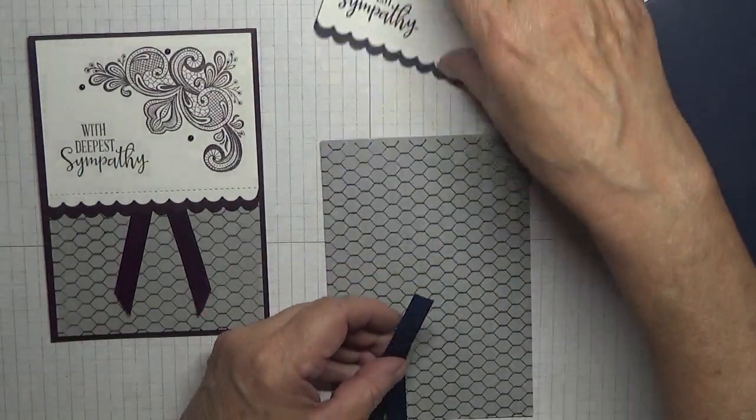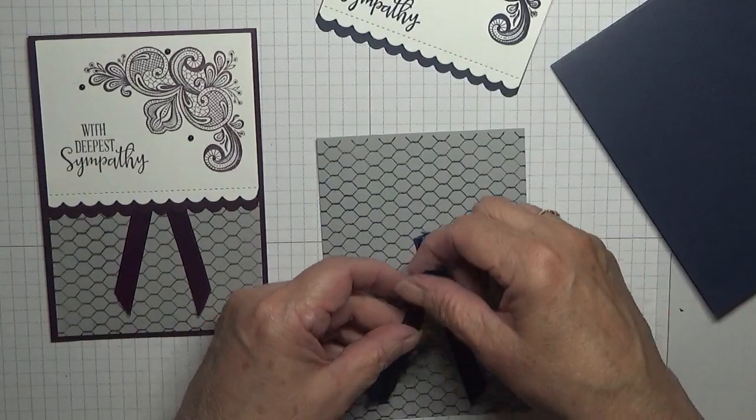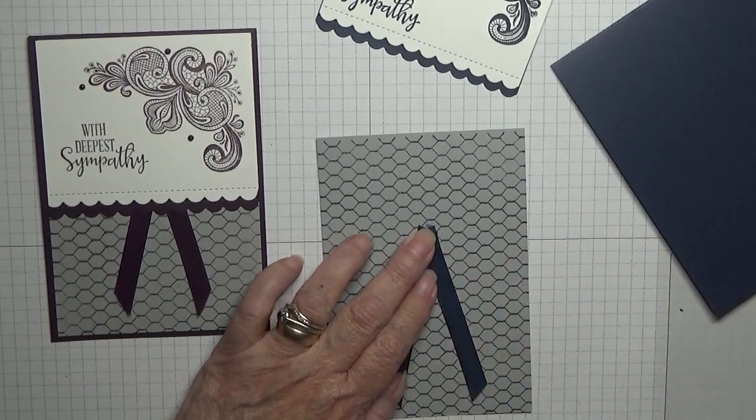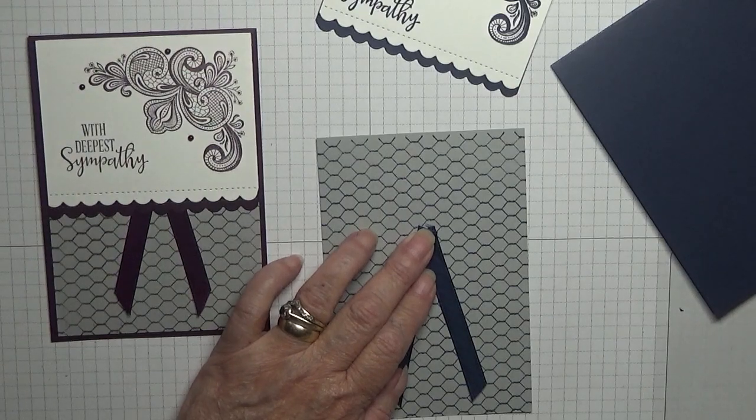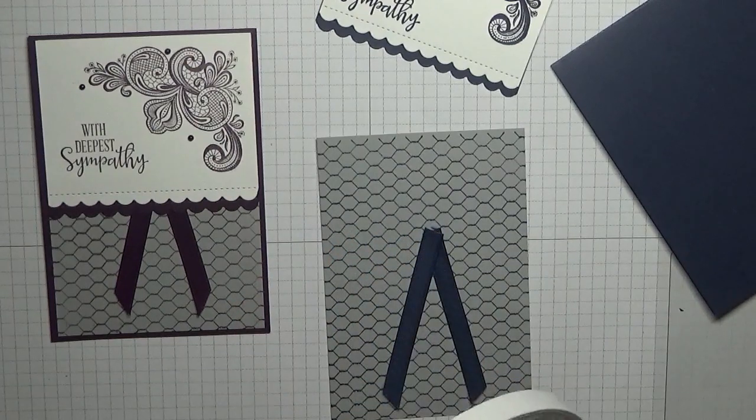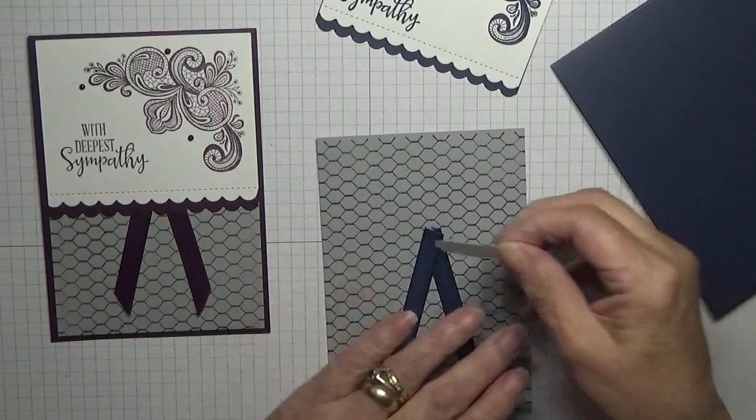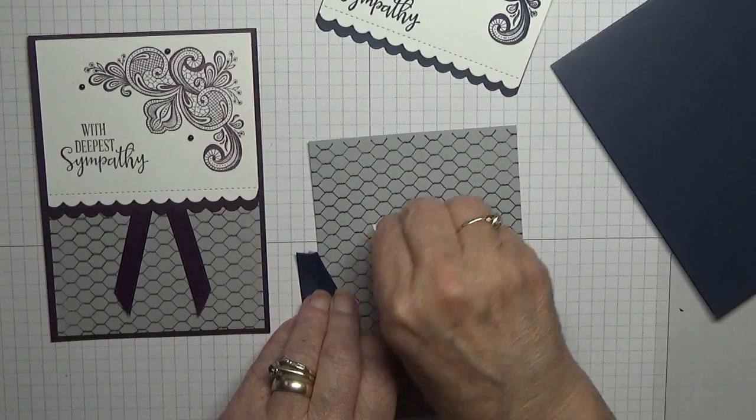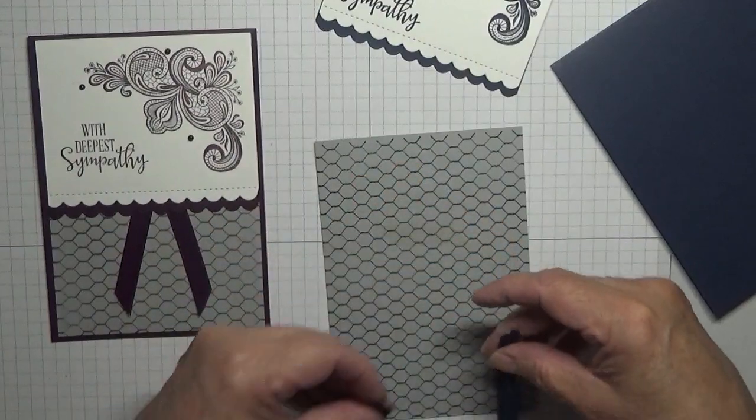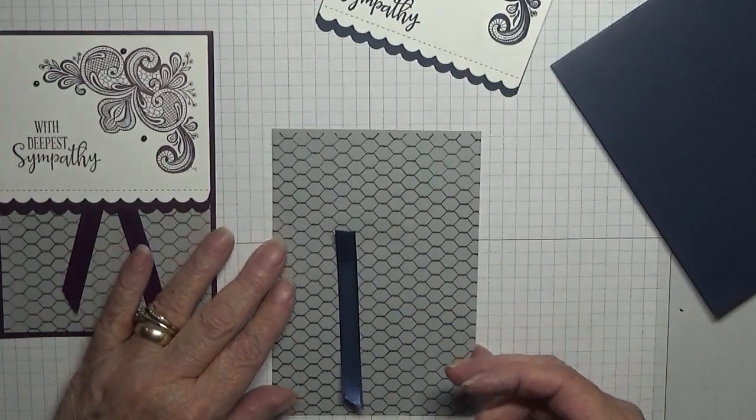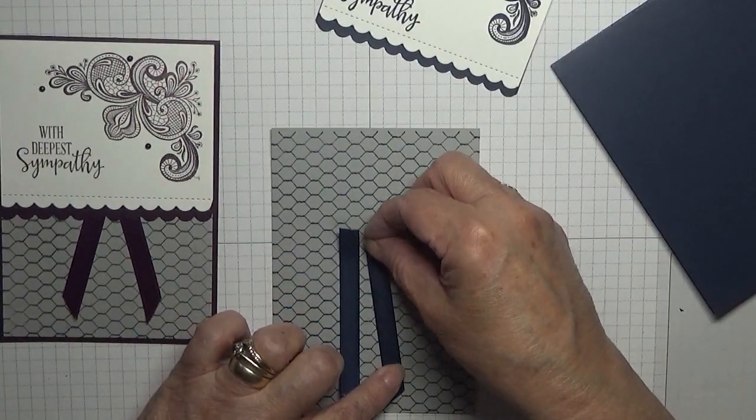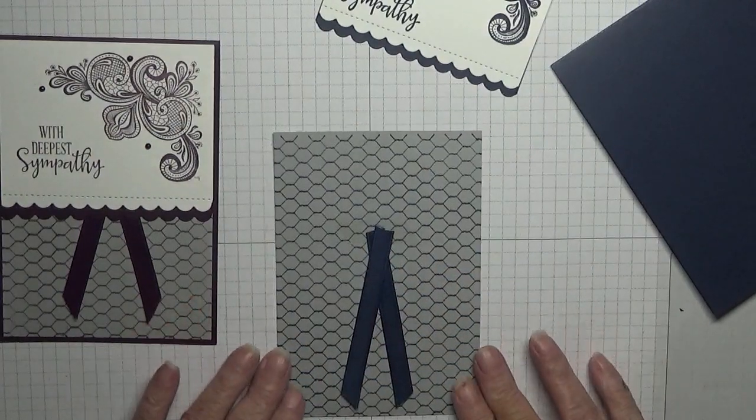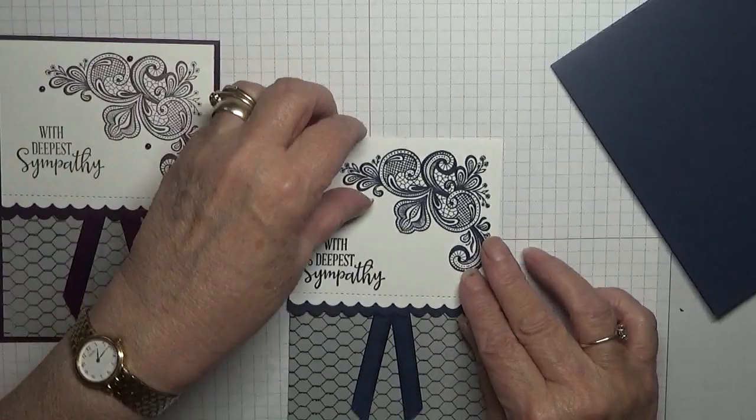But before we do that, we need to put down our ribbon. And to do that, I shall put down a bit of double-sided tape. Don't need a lot. Don't need a lot, I'd say that was the middle, like that, like that with that on top, like that.